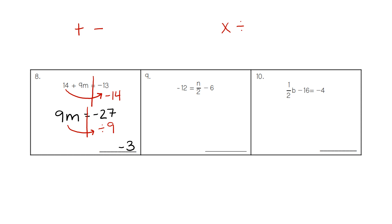For number 9, we draw our line down the equal sign. We move the negative 6 away — notice the arrows go the opposite direction, but we still move the number away from the variable. The minus 6 changes to a plus 6. On the calculator, negative 12 plus 6 gives a value of negative 6. We still have n over 2, so the opposite of dividing by 2 is to multiply by 2. Negative 6 times 2 gives a value of negative 12.